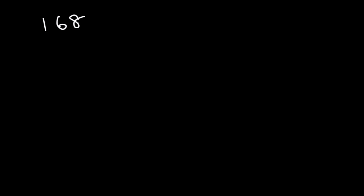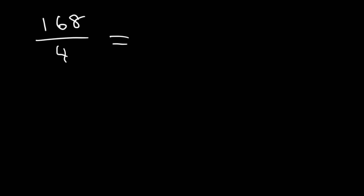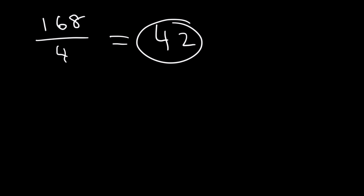Here's another example: 168 divided by 4. Notice that 16 and 8 are both multiples of 4. First divide 16 by 4 — that's 4. Then divide 8 by 4 — that's 2. So this gives you 42.